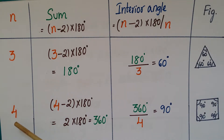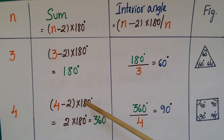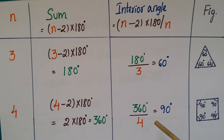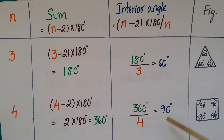Next, suppose the number of sides is 4. The sum of angles is (4 minus 2) into 180, that is 2 into 180, which equals 360 degrees. The interior angle of this quadrilateral is 360 divided by 4, which equals 90 degrees. Each angle being 90 degrees means it is a square.